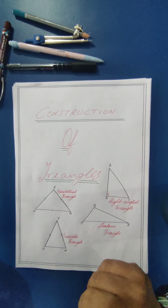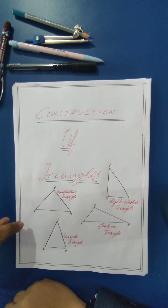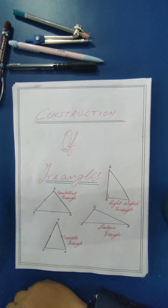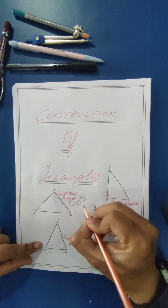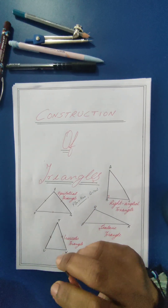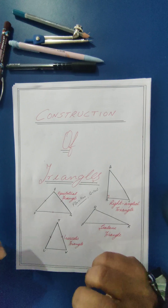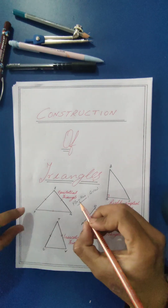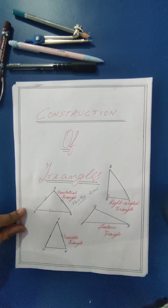If you know the properties of all these triangles, it is easier to draw the construction, because in the questions sometimes only a few dimensions are given. By using the properties of the triangle you have to identify the missing dimensions. For example, in an equilateral triangle, if only one side FG is given as four centimeters, you should know that in an equilateral triangle all sides are equal, so all sides will be four centimeters.